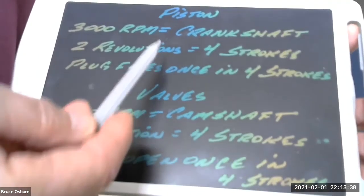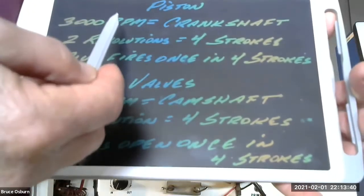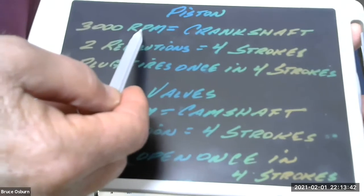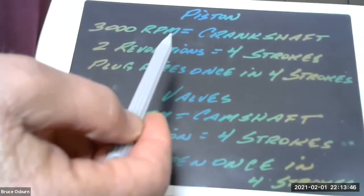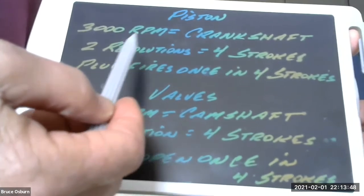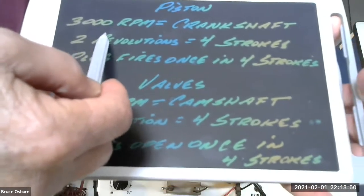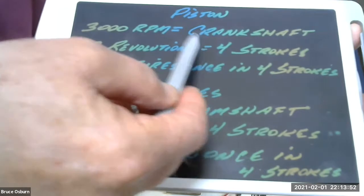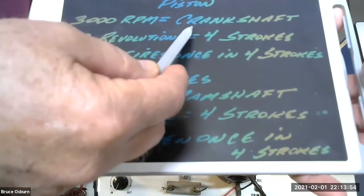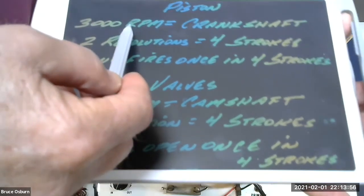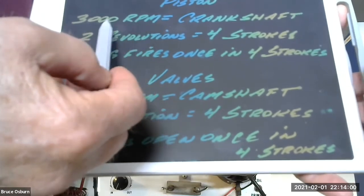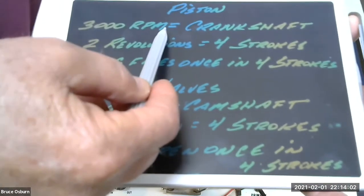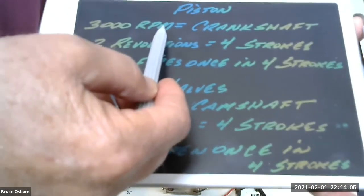When it comes to the piston, when we're driving down the freeway at 3,000 RPM, maybe 70 miles an hour, that 3,000 RPM refers to the crankshaft. The crankshaft is turning, revolving, 3,000 times per minute, revolutions per minute.